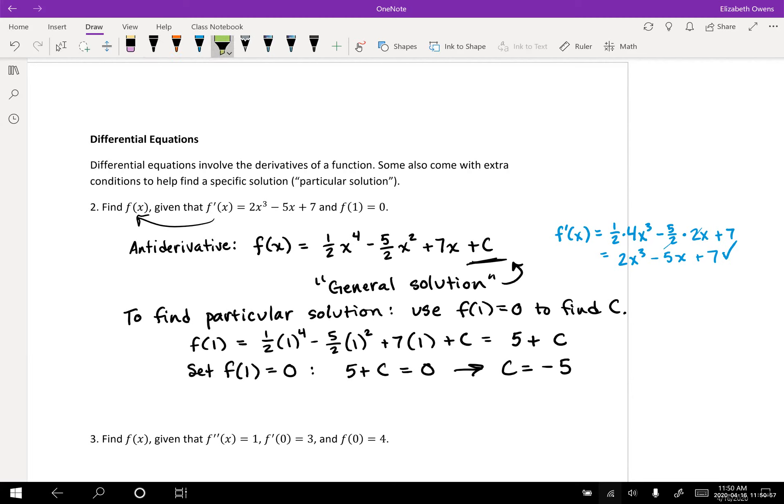That's going to give us c equals negative five. So that is the specific value of c that we want to fully solve this differential equation. Okay, it's got the right derivative. And when c equals negative five, it will also meet that extra condition. Okay, so our answer here is that f of x is going to equal one half x to the fourth minus five halves x squared plus seven x minus five. So that's putting in our c value on the end right there.